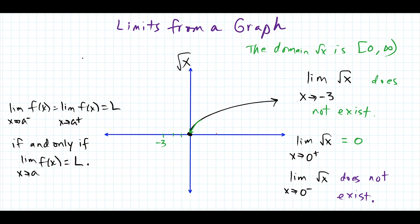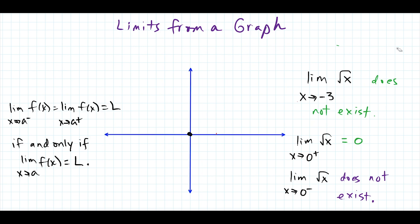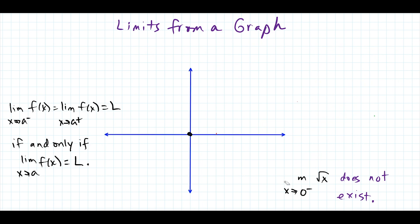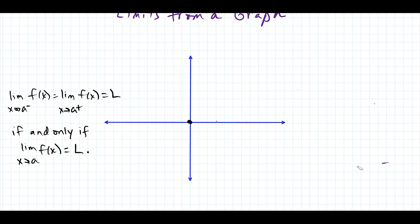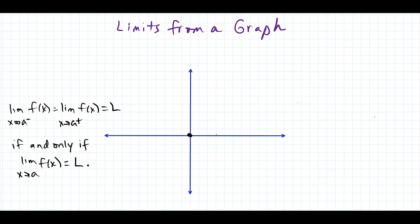The last case before we look at mixed examples is what happens when we have horizontal asymptotes. You have to be a little careful when you read them, but once we look through this, we'll have all the tools we need to look at mixed examples combining multiple rules. We'll look at a case where we actually have two horizontal asymptotes.